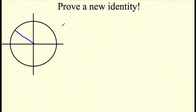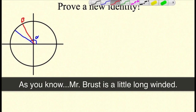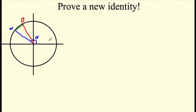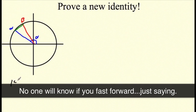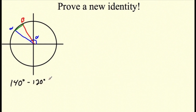My goal is to prove what happens when I subtract or add two angles. Starting with subtracting: this blue angle is alpha, and the red angle is beta. Subtracting them gives the distance between alpha and beta — that's the angle alpha minus beta. If alpha is 140 degrees and beta is 120, you get 20 degrees. The distance between this angle and zero should be the same — that's the basis of this proof.